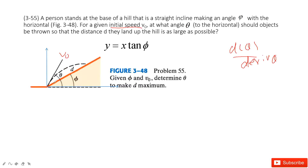To find the equation between d and theta, we note that this is a hill and we can use a function to describe it. If this is x and this is y, then the hill must satisfy the equation y equals x tangent phi.